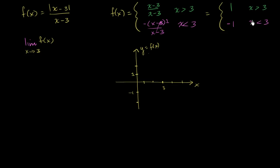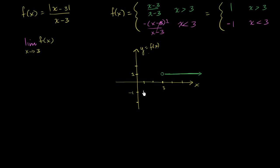This rewritten function is the exact same function — we've just written it differently. The function is undefined at x equals 3. For x greater than 3, the function equals 1, so the graph is a horizontal line at y equals 1 to the right of 3. For x less than 3, the function equals negative 1. Both sides have open circles at x equals 3 since the function is undefined there.